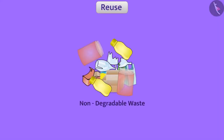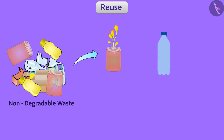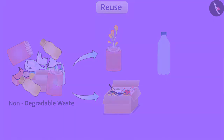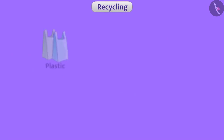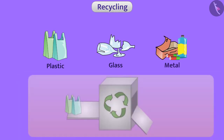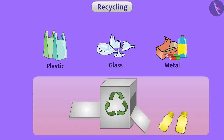Some items of non-biodegradable waste can be used in various ways. For example, flowering plants can be grown in plastic jars, and water bottles can be used for watering these plants. Using the same objects again and again is called reuse. Some materials such as plastic, glass, and metal can also be recycled — in this process, objects are converted into other objects with the help of heat and pressure.